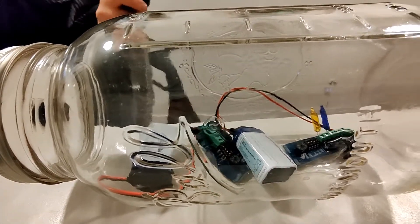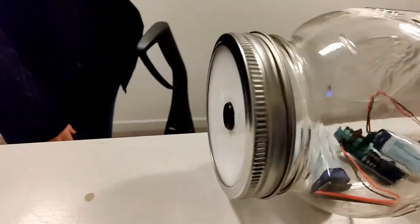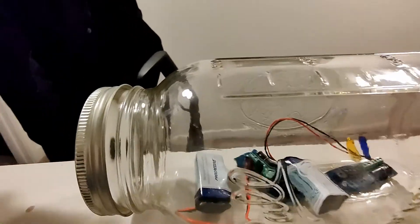So three beeps means main and drogue is armed. So now we are going to draw a vacuum in this mason jar that has a hole in the cap. Go ahead and fire it up.